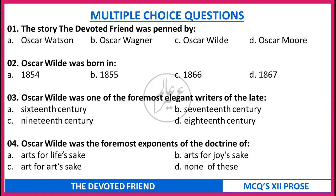Pause the video, write your answers, and then resume to check. Here are the correct answers: First - Oscar Wilde. Second - 1854. Third - 19th century. Fourth - art for art's sake.